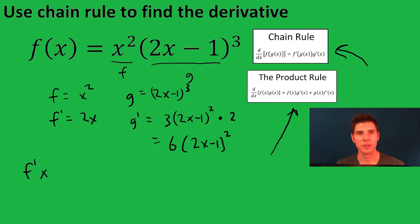So I'm going to say f prime of x is equal to, so our f is x squared. Our g prime is all this stuff, 6 times 2x minus 1 squared, then plus our g is 2x minus 1 cubed, and our f prime is 2x.